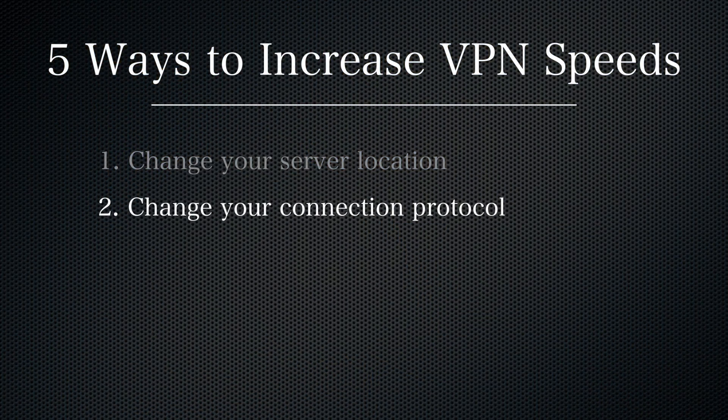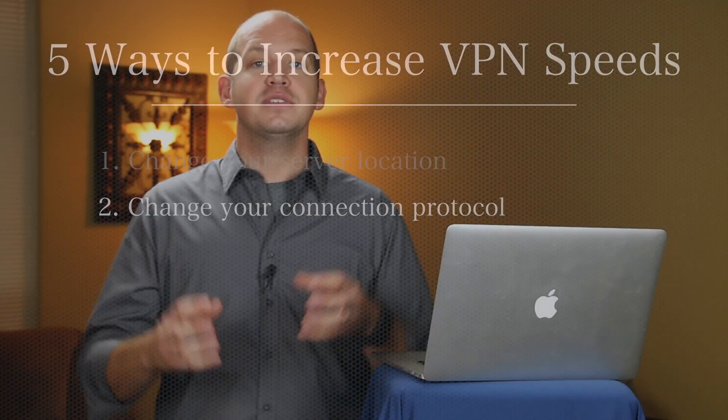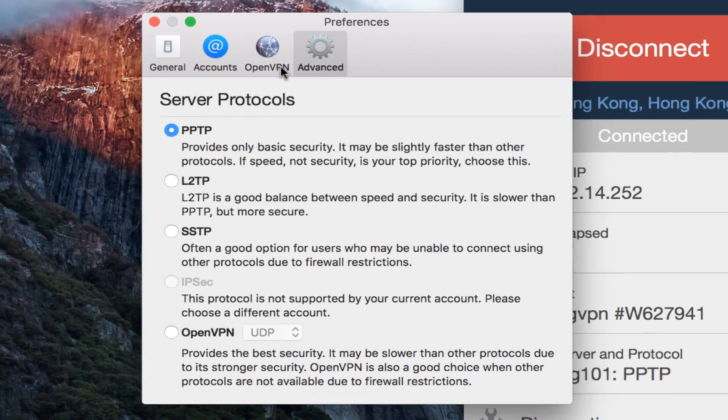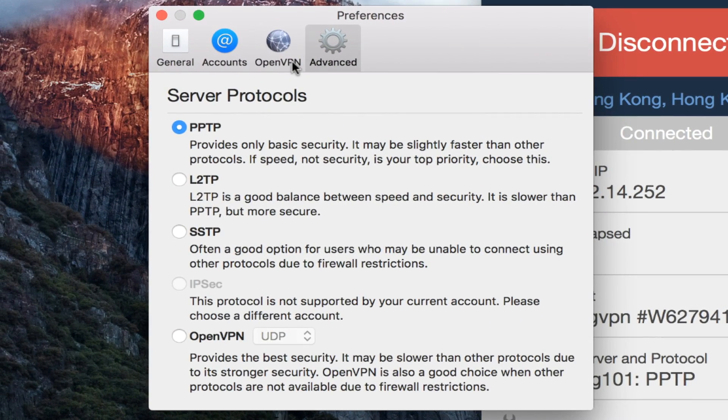Number two, change your connection protocol. Your level of encryption also has a direct correlation to the speed of your connection. For instance, if your VPN is currently connecting on an IPSec or OpenVPN protocol, changing it to the faster but somewhat less secure PPTP protocol might speed up your connection. If you don't know what I'm talking about, that's okay. In most cases, you can look on the VPN program itself or the preferences menu to make this change.